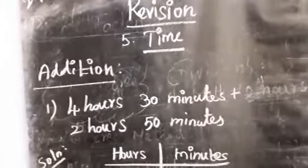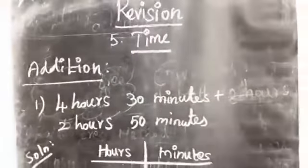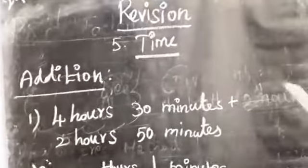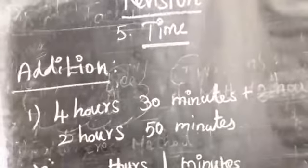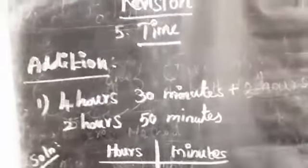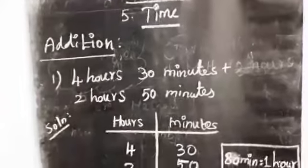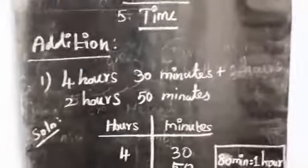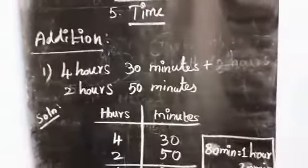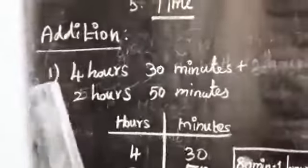Recall: 90 minutes equals 60 minutes plus 30 minutes. We can separate it — 60 minutes becomes one hour, and 30 minutes stays as 30 minutes. Similarly, 75 minutes equals one hour 15 minutes. Now recall the addition in finding time interval and look at the first sum.